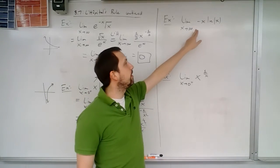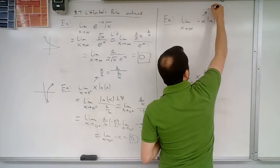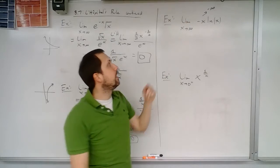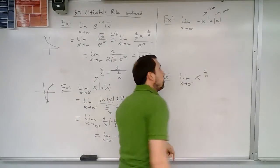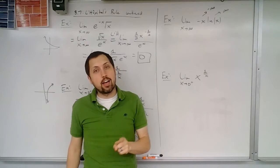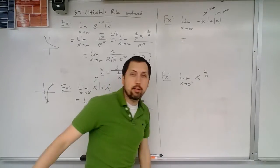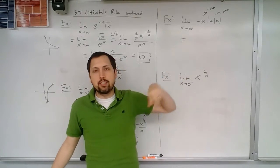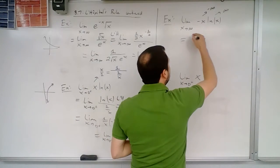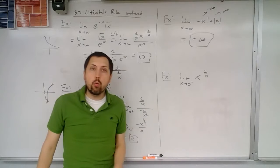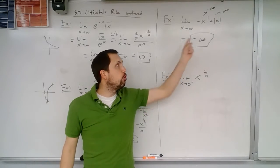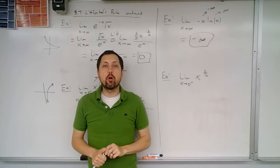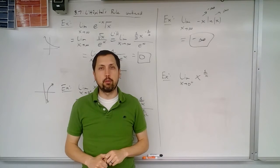Now consider the limit as x goes to infinity of negative x times the natural log of x. As x goes to infinity, negative x goes to negative infinity, and the natural log of x goes to infinity. So we have negative infinity times infinity — but this is NOT an indeterminate form. These are working together, making the number grow in magnitude. Positive times negative is negative, so this limit is equal to negative infinity. Make sure you know what is and isn't an indeterminate form, because you don't want to apply L'Hôpital's rule unless it truly is one.